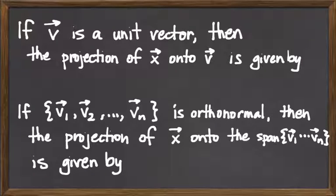The first is, if I have a unit vector, let's say V is a unit vector, then how do I project onto the span of that unit vector? In other words, if I just have a one-dimensional subspace with a unit vector as the basis, then how do I project onto that subspace?